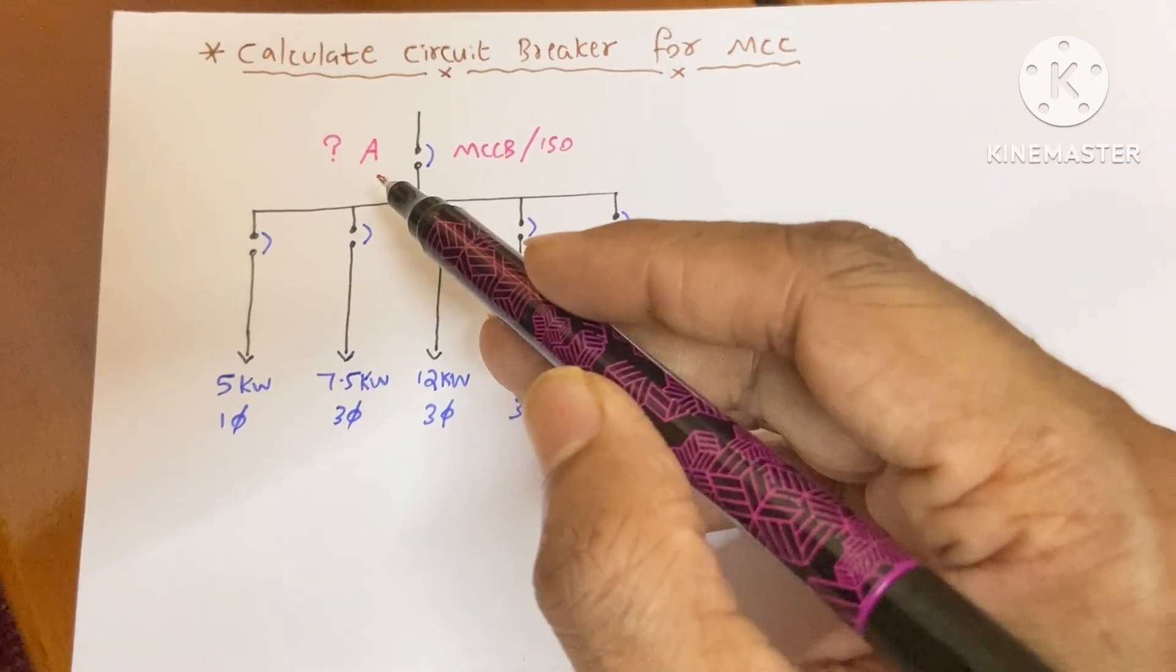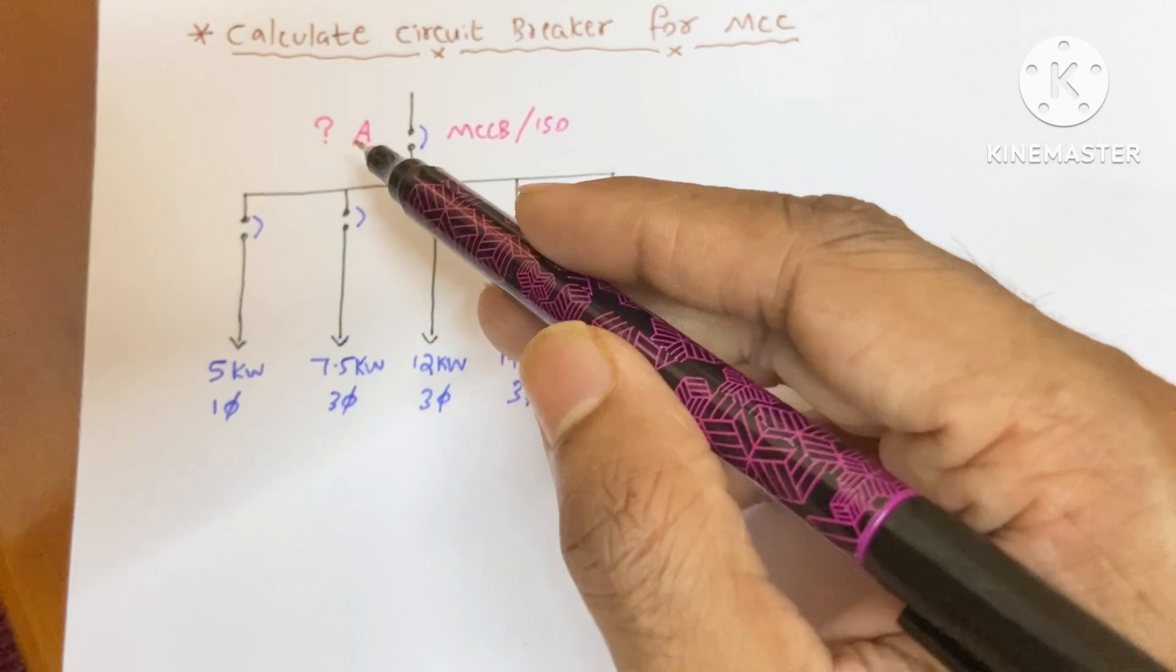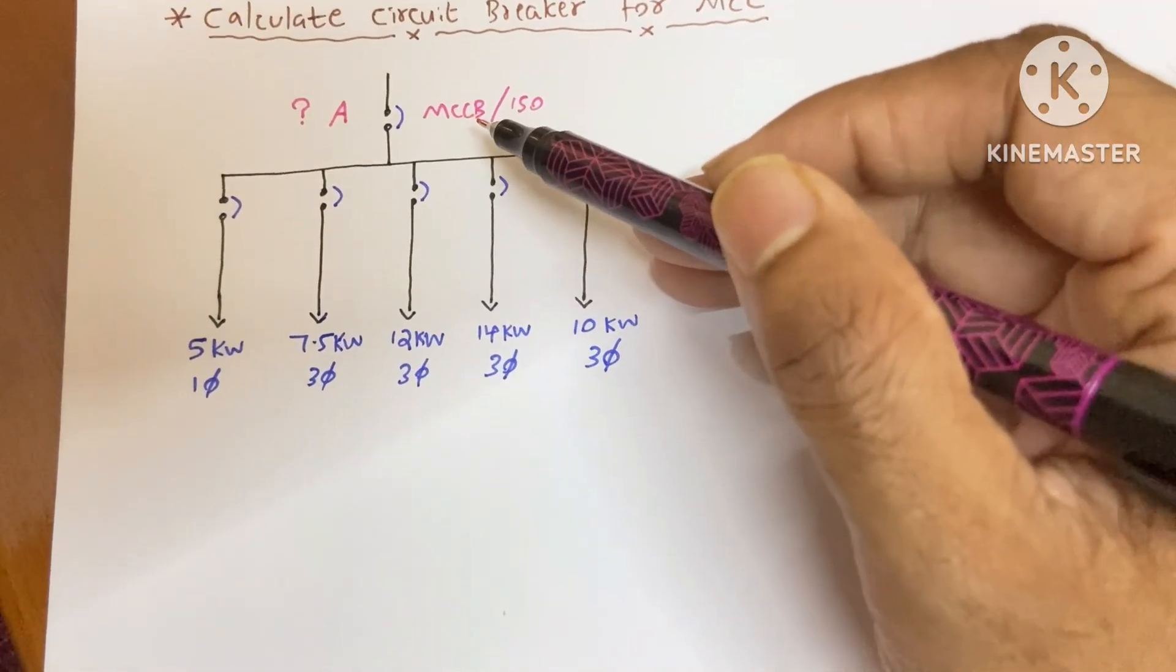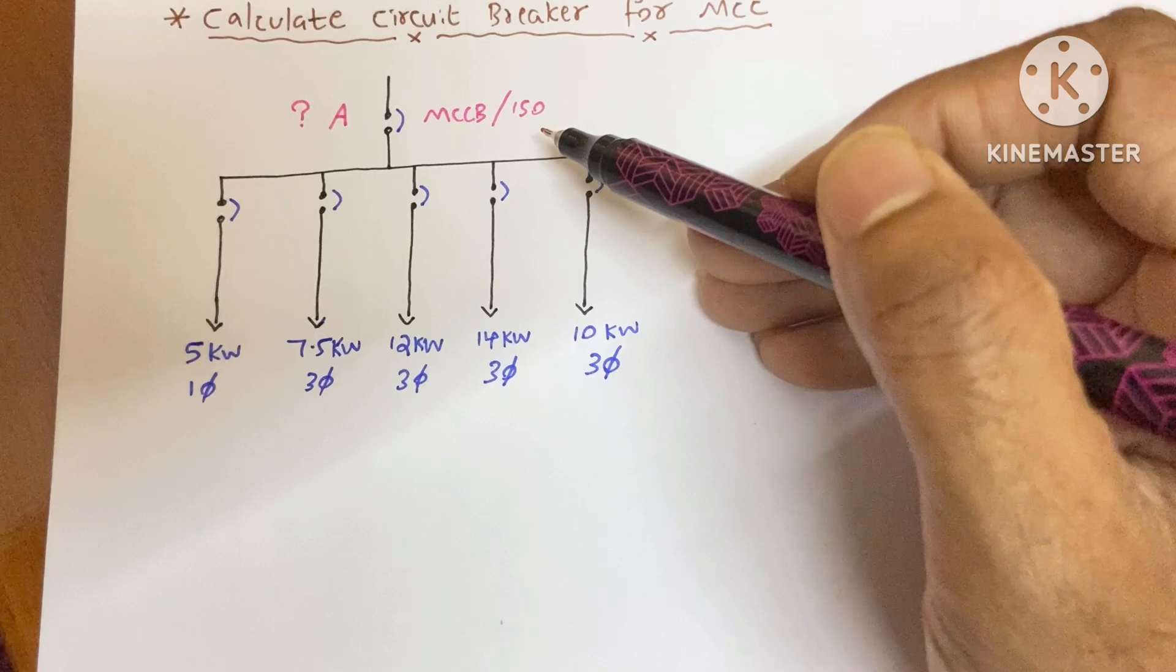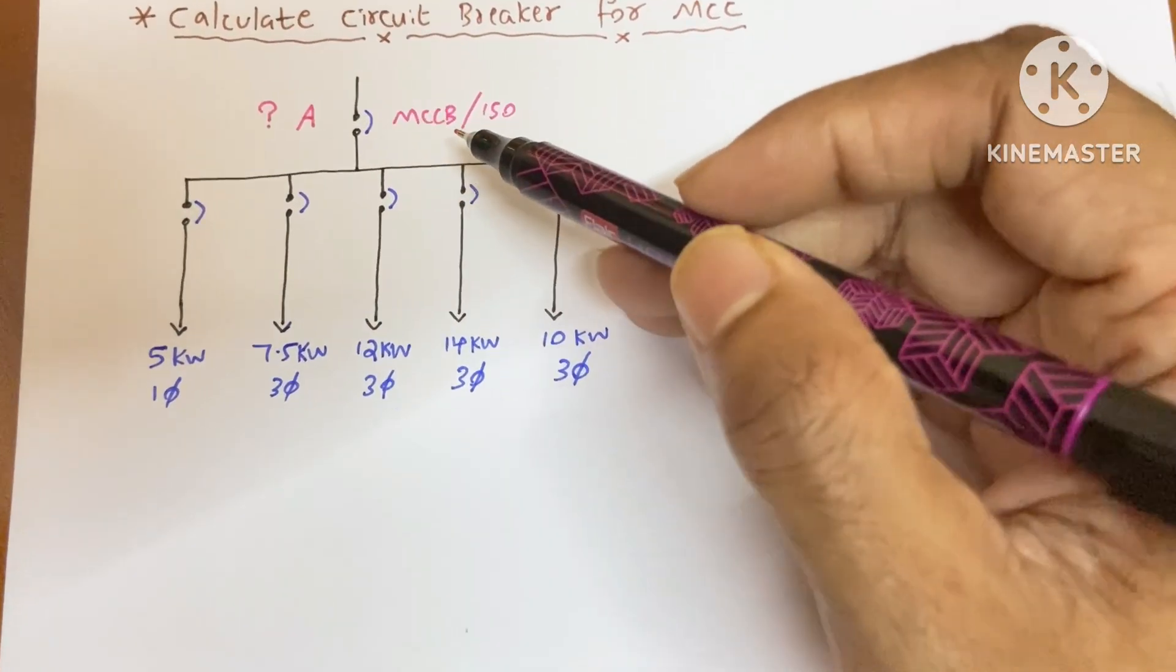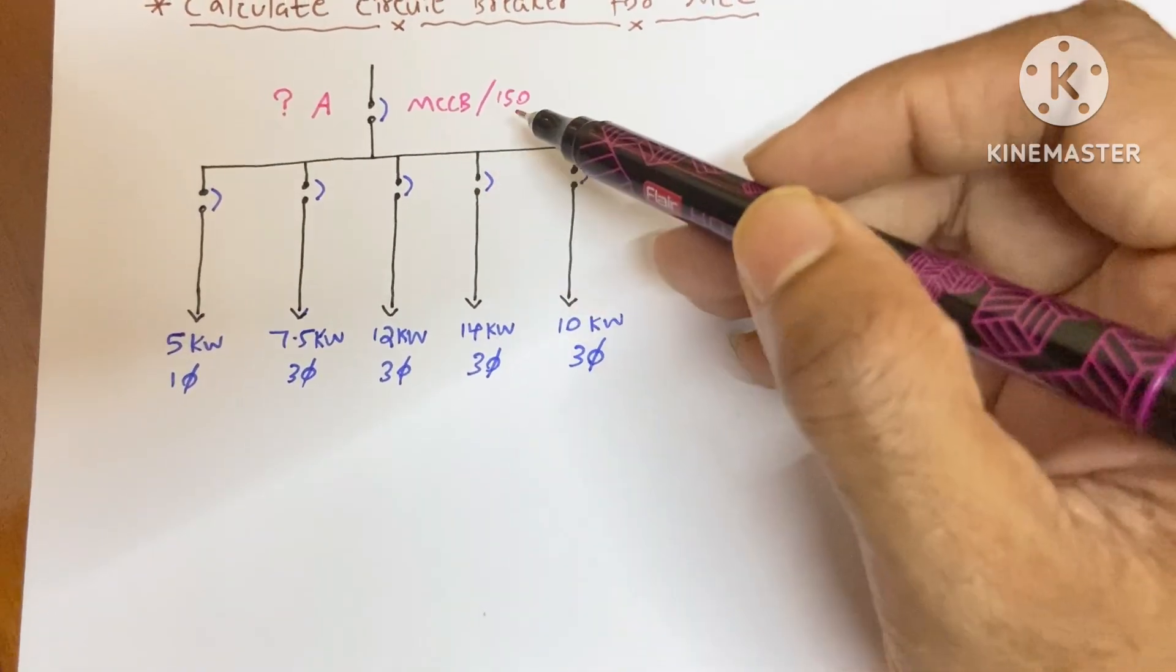We are going to size the incoming breaker, which I mentioned as MCCB or isolator. In some countries the incoming MCCB would be used, but in other countries an isolator would be used.